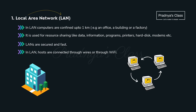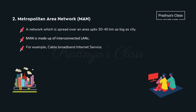What is a local area network — LAN? In case of LAN, the computers are spread over 1 km, like in an office, building or factory. The main advantage of using LAN is resource sharing. As the devices are connected through wires or Wi-Fi, communication is secure and fast. The second type is metropolitan area network — MAN. This network is spread over a city, within 30 to 40 km. We can connect different LANs to a MAN. An example is a cable network.